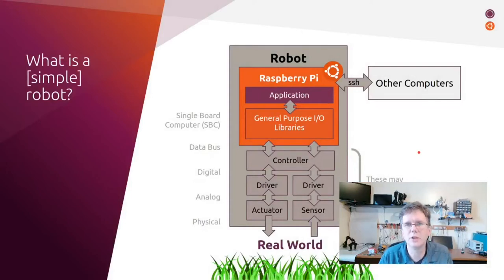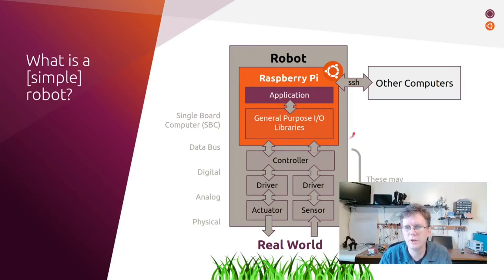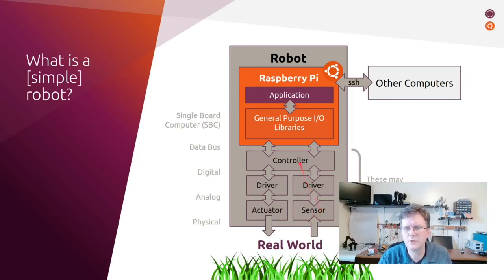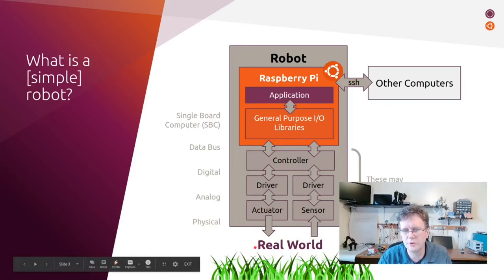Let's look at the basic structure of how a robot is put together. The conceptual model is based on a computer — our robot will be running a Raspberry Pi. There's an application that makes the robot run on that computer, typically interfacing with technology through general-purpose libraries. It will have a data bus, typically a USB connection to a controller. A controller makes a digital connection to a driver, which translates the digital signal into an analog signal to make an effect in the real world via an actuator, or to sense something from the real world via a sensor.